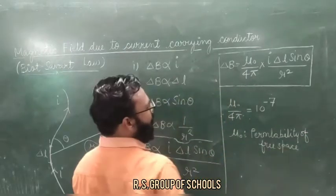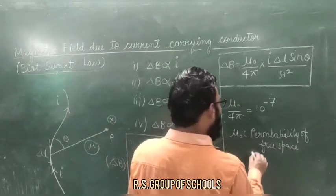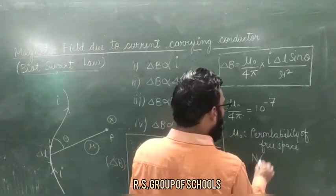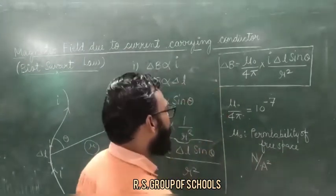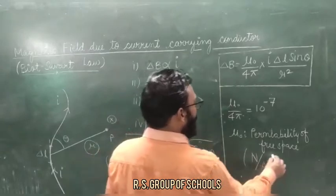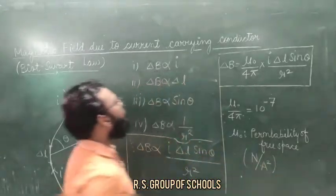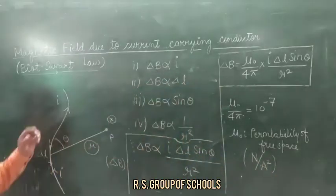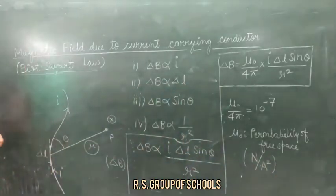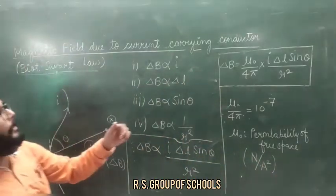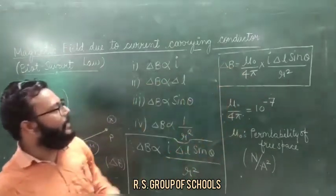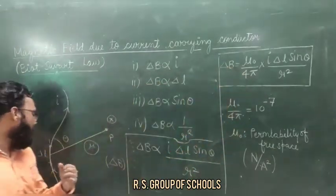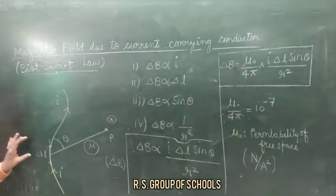The unit of mu naught is newton per ampere squared. In this way, we have derived an expression for the magnetic field produced by a small current carrying element.